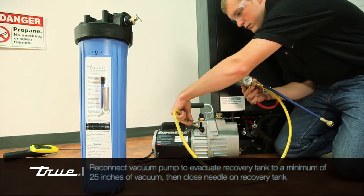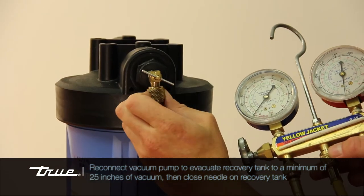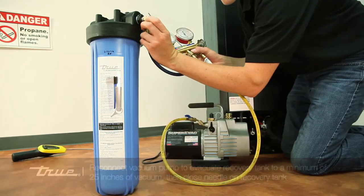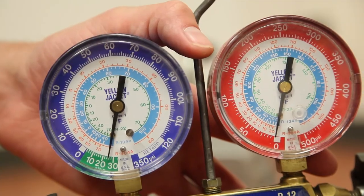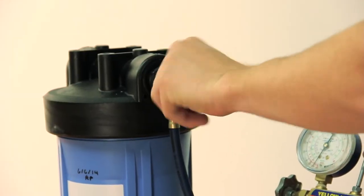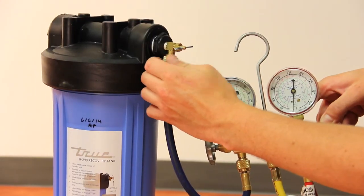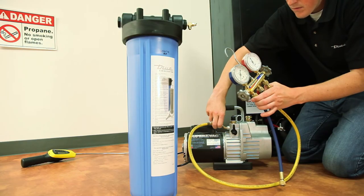Reconnect the vacuum pump and again evacuate the recovery tank to a minimum of 25 inches of vacuum. After a minimum of 25 inches of vacuum is achieved, close the needle valve on the tank along with the knob on your gauges and disconnect the hoses from both the tank and the vacuum pump.